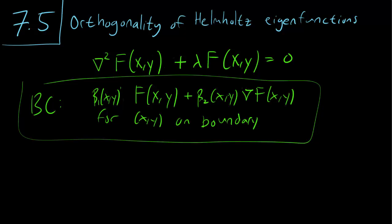So we have here the Helmholtz equation with the boundary conditions. For any x,y on the boundary, beta1 F(x,y) plus beta2 gradient of F(x,y) equals 0. Because of these boundary conditions, as we discussed in the previous video, this implies that the Laplacian is going to be self-adjoint.